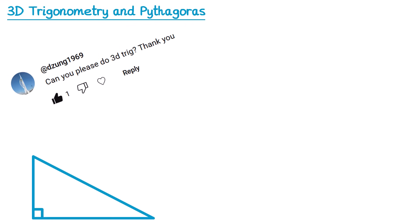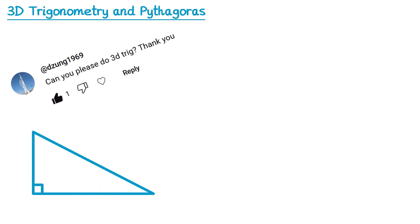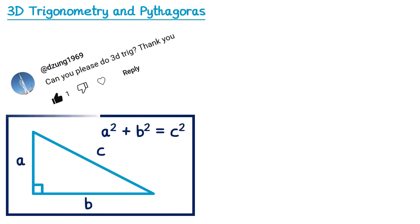In order to do this topic you need to be good at both of these in two dimensions first. For 2D Pythagoras, we take a right-angled triangle, we label the two shorter sides as a and b, and the longer side, the hypotenuse, as c. We can then use the formula a² + b² = c² to find one of the missing sides.